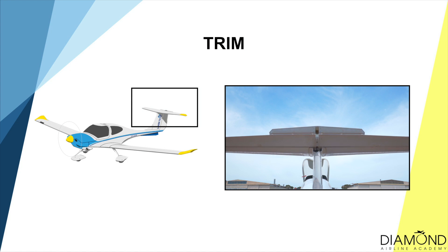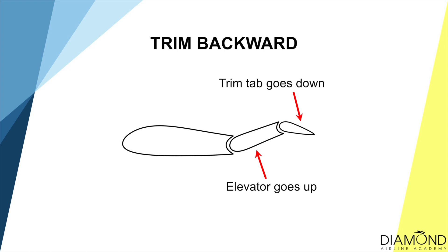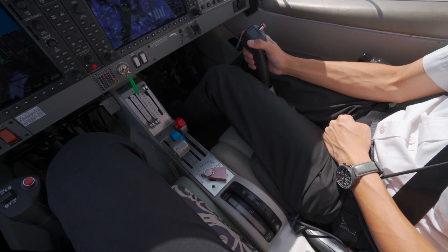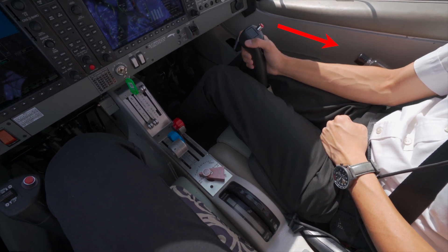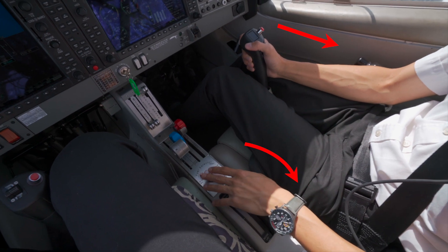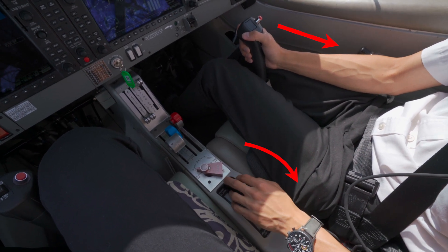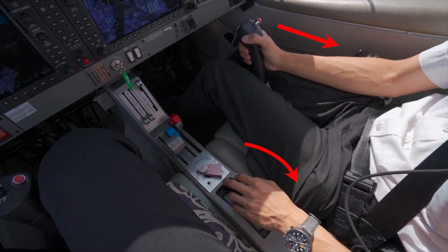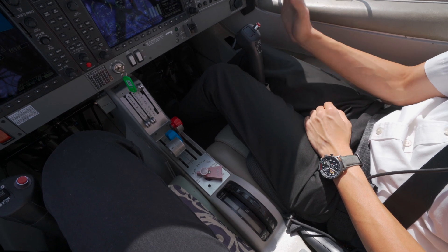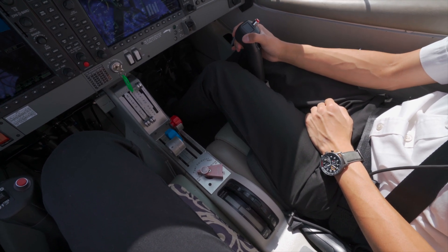The next control to talk about is trim. You may ask — what is trim? Imagine we're starting a climb: to initiate a climb, we pull back on the controls. However, if we want to climb for a period of time, we have to keep applying pressure on the stick, which can be tiring and inaccurate. Because of that, engineers came up with trim. When we are pulling on the controls, we can move the trim back, which alleviates the force we're applying. We trim until no pressure is required on the stick and the attitude is maintained. This is what we call the aircraft being trimmed.